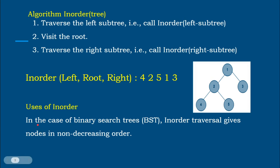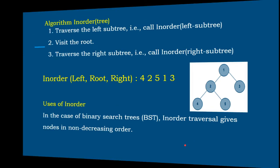The purpose of in-order traversal is that in the case of binary search trees, in-order traversal helps traverse the tree and gives the elements in non-decreasing order — that is, it produces the ascending order of the given elements.